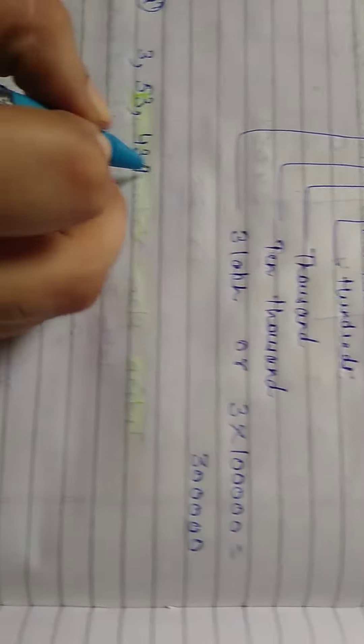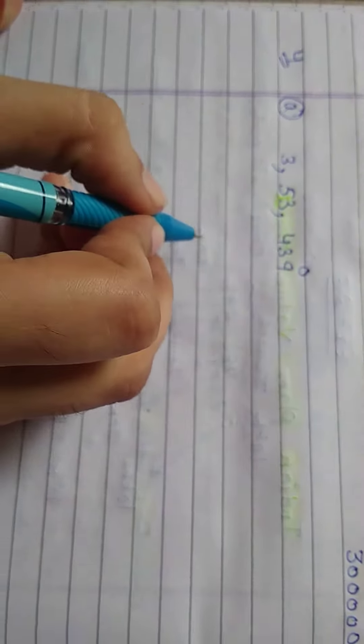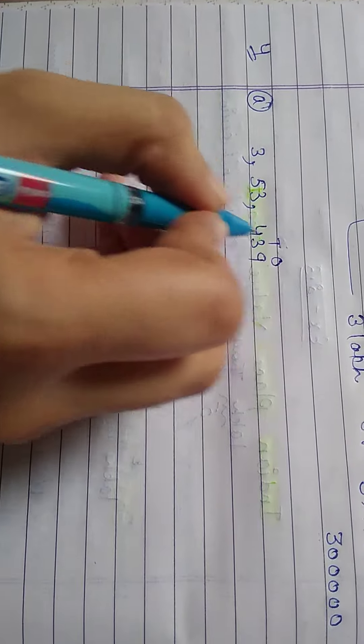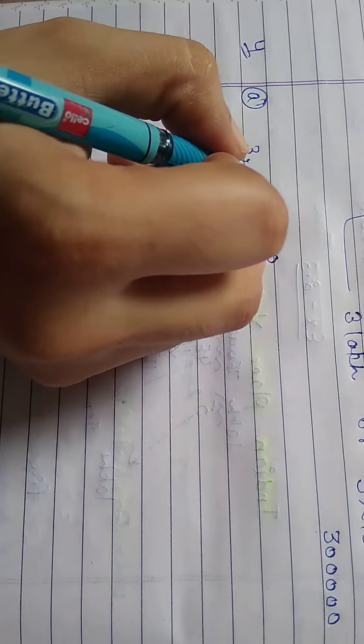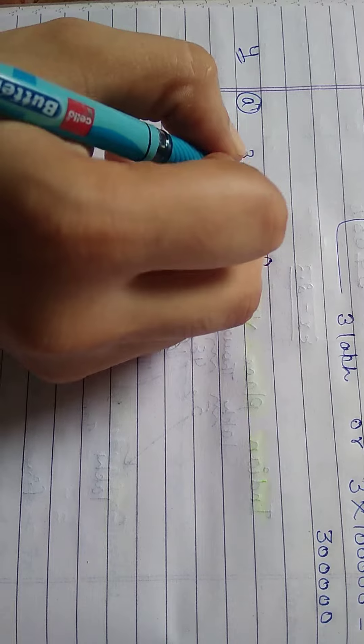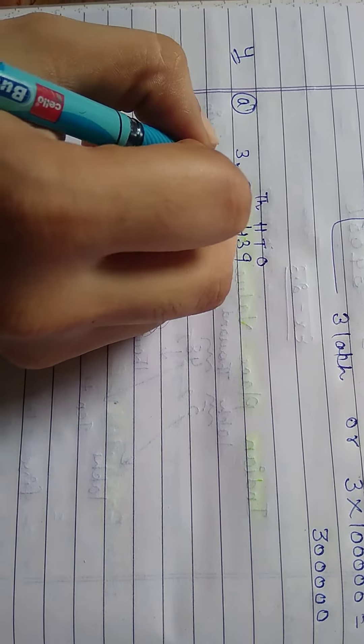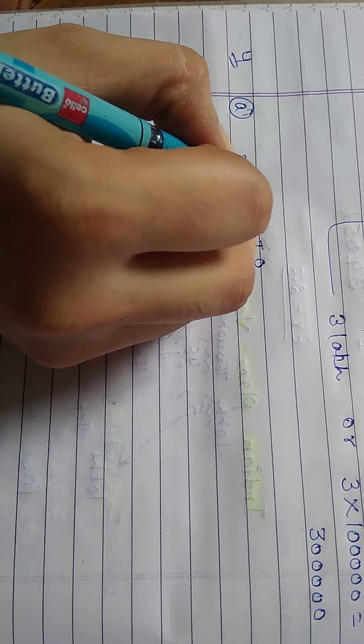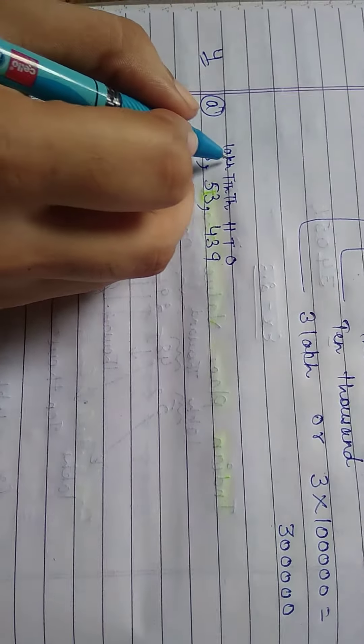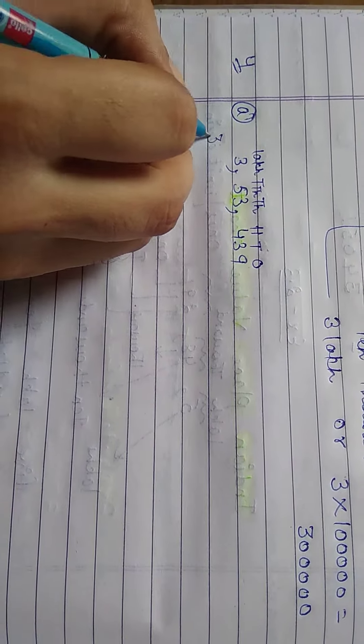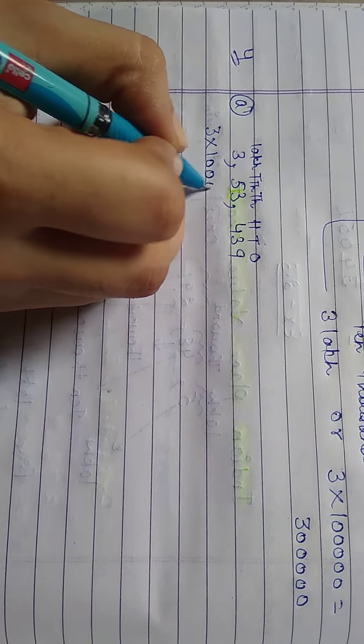We know that 9 is at 1's place, 3 is at 10's place, 4 is at 100 place, 3 is at 1000 place, 5 is at 10,000, and this 3 is at lakh place. So we will multiply 3 by 1 lakh.